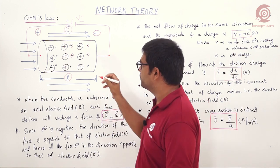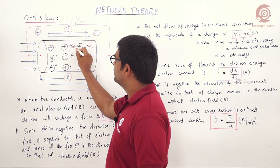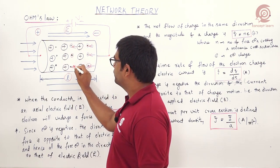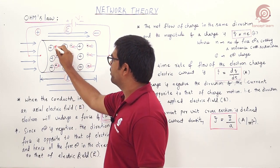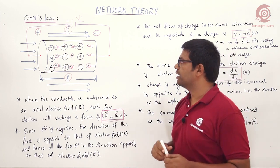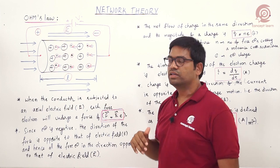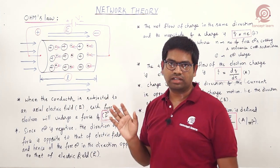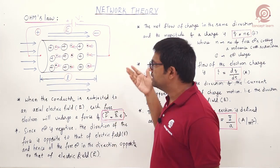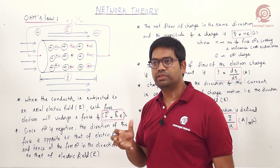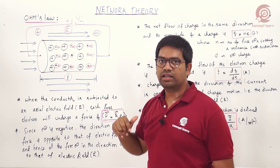Since the electron is a negative charge, it moves in the opposite direction to the field. Only free electrons move — not all electrons in the material. Because of these free electrons, conduction is possible. Free electrons move opposite to the electric field direction.